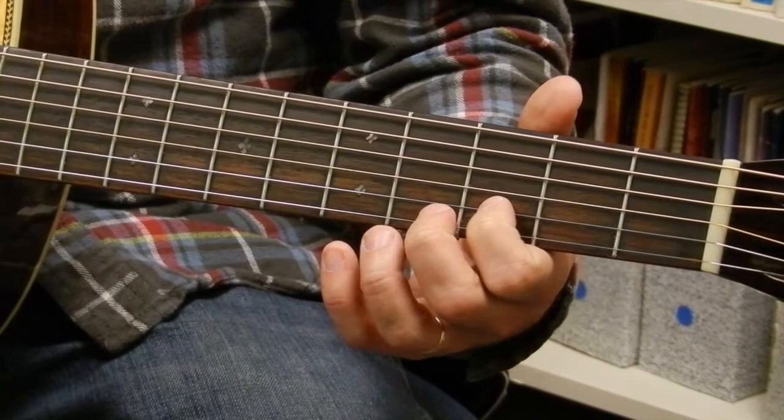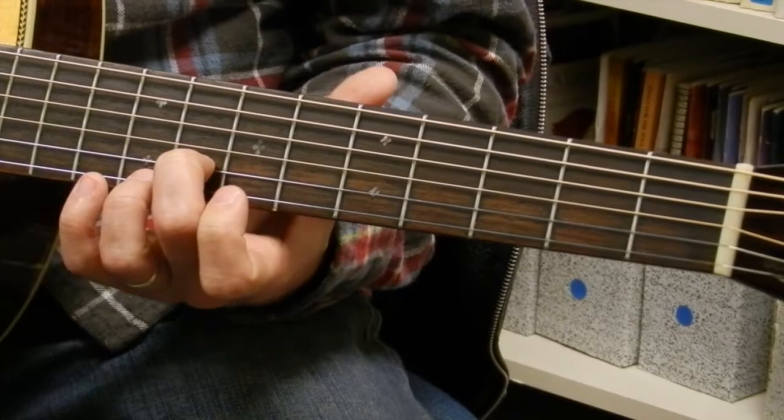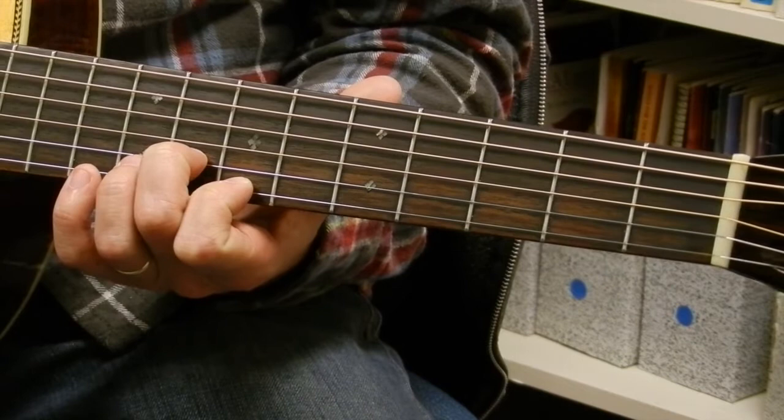Now, we'll go to the B string. B, C, C sharp, D, D sharp, E, F, F sharp, G. Okay, G is one of the notes. So now we've got B and G.